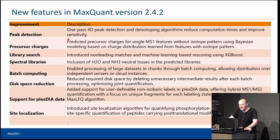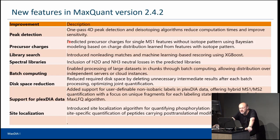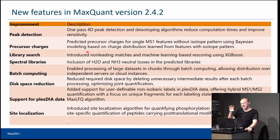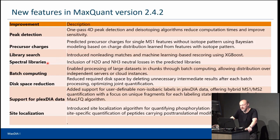We can now do precursor charge prediction, which helps with identification — for precursors not coming with an isotope pattern, we can make a good guess about the charge based on other properties. We can also obtain non-leading matches, similar to DDA where you get not only the leading PSM but also non-leading PSMs. Additionally, the predicted spectral libraries now include not just Y and B ions, but also losses of water and ammonia, which has boosted performance quite a bit.